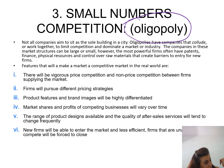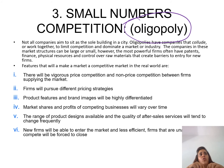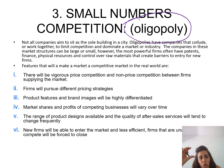Sometimes these firms create something called a cartel. They do this because they want to collude. Collusion means companies work together in order to limit competition. For example, all of them might decide to decrease their prices in order to create barriers to entry for new firms, and later they can increase their prices again. They prefer staying limited in number so they remain in control of prices.